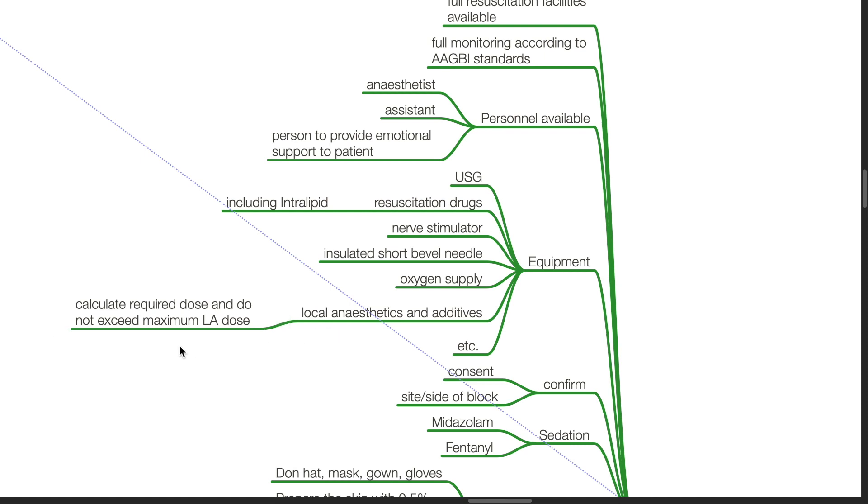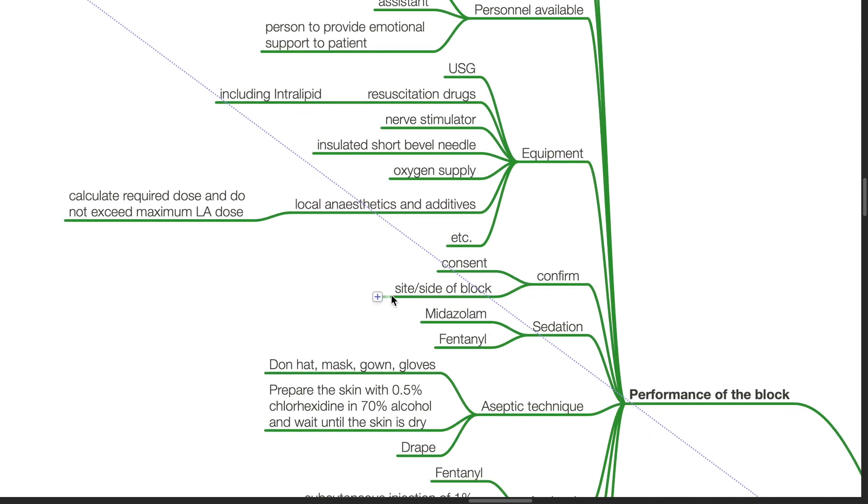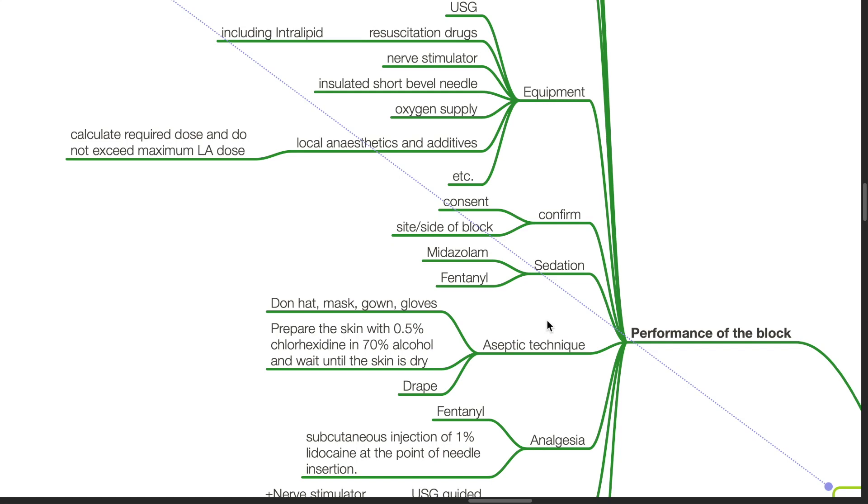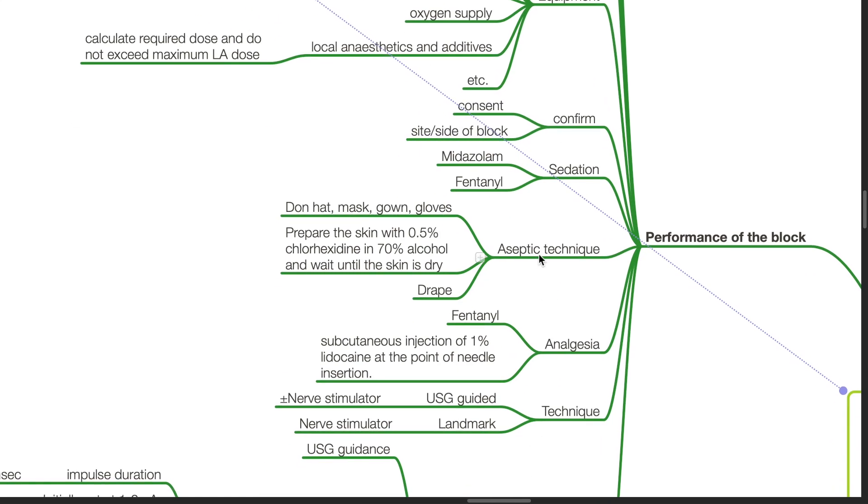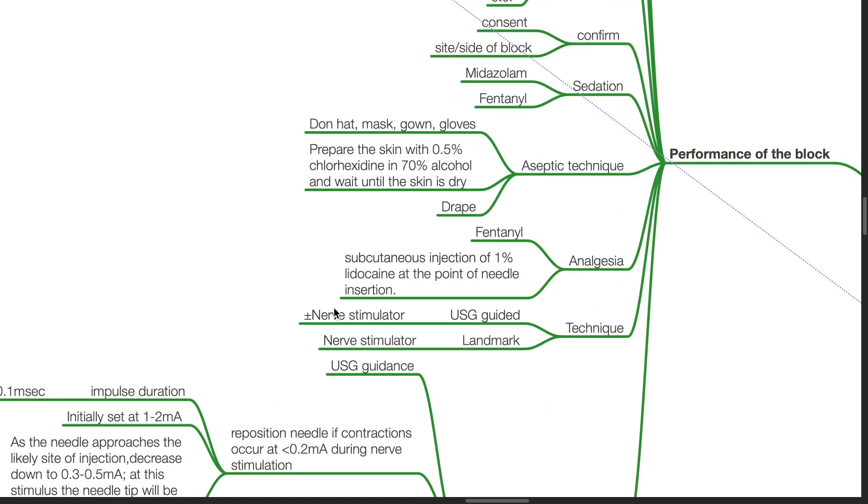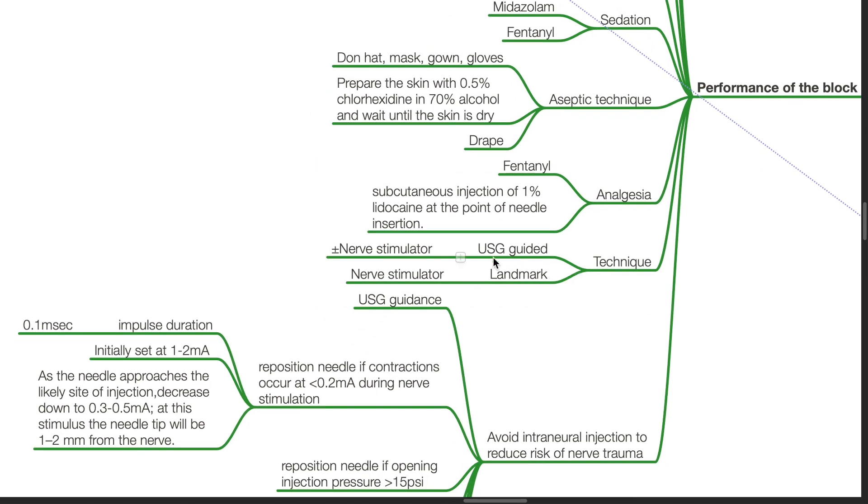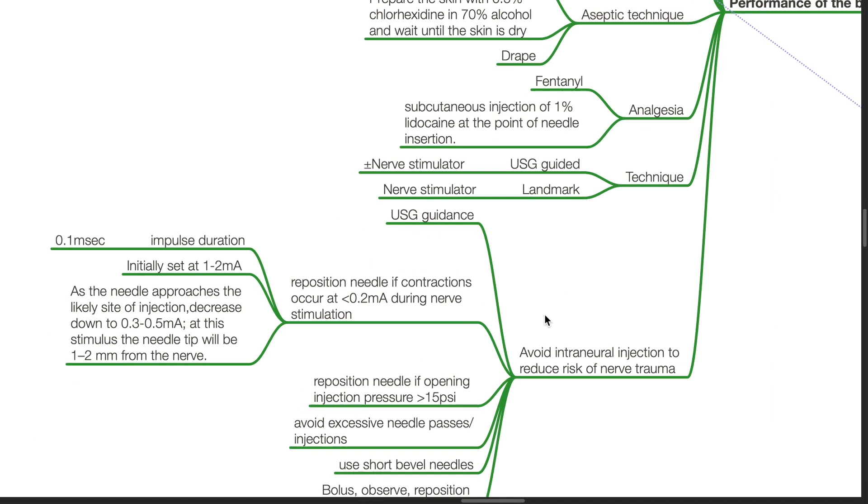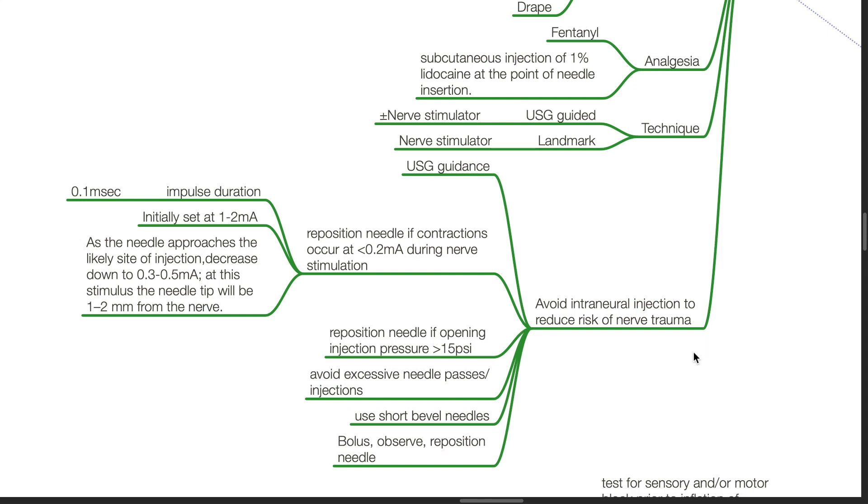Calculate the required dose and do not exceed maximum local anesthetic dose. Confirm consent and side of the block. Sedation with midazolam and fentanyl. Aseptic technique: don head, mask, gown, and gloves. Prepare the skin with 0.5% chlorhexidine in 70% alcohol and wait until the skin is dry and draped. Analgesia includes fentanyl and subcutaneous injection of 1% lidocaine at the point of needle insertion. Techniques include ultrasound-guided technique with or without nerve stimulator and landmark technique with nerve stimulator. Avoid intraneural injection to reduce the risk of nerve trauma.